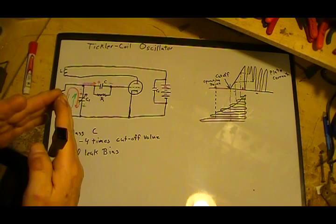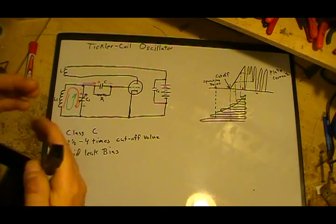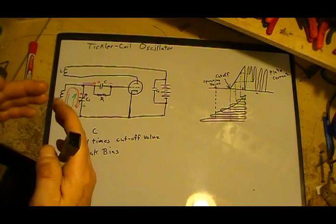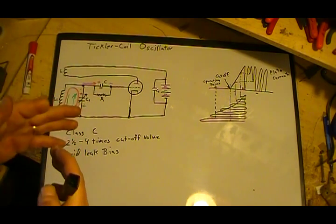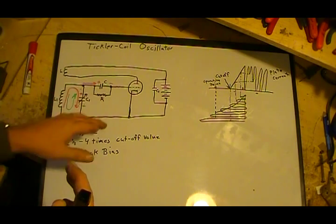What the resistors are for is for the time constant. Whenever you put a resistor and a capacitor together, they have what is known as an RC time constant.